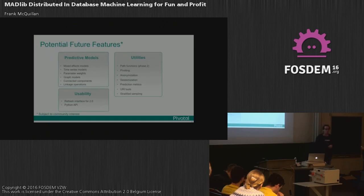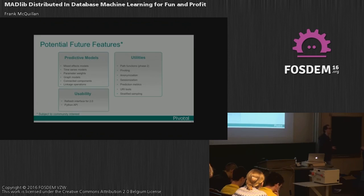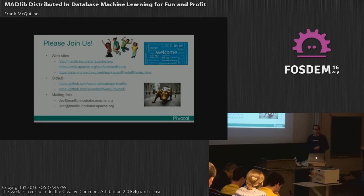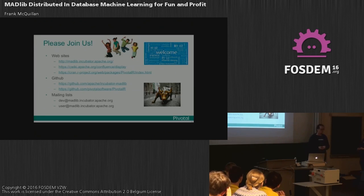In the future, there are areas we're very interested in: a lot more utilities, more predictive models including those listed here, and in terms of usability, thinking about a Python API as an example for a 2.0 release. You're more than welcome to participate in the project — there are links for the website, GitHub, and mailing lists. Check it out, and if you have questions, send them to the mailing list and we'd be happy to respond.